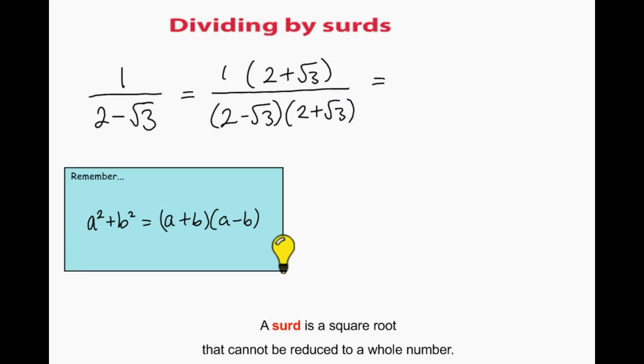The conjugate of 2 minus root 3 is 2 plus root 3. Notice on the bottom we have the difference of two squares. So 2 squared is 4, and minus root 3 by plus root 3 is minus 3. So that's 2 plus root 3.